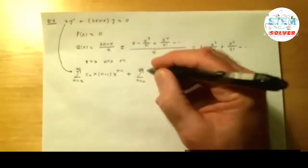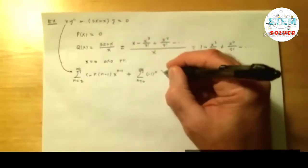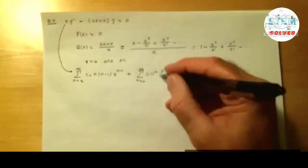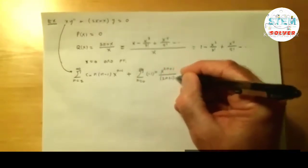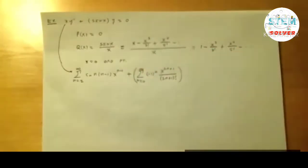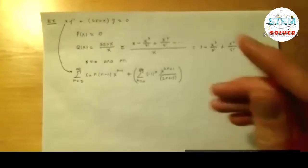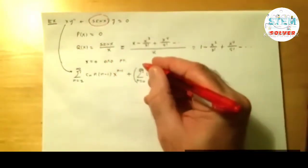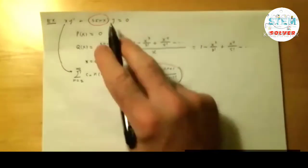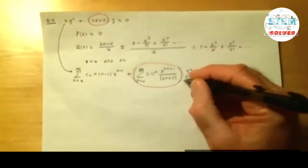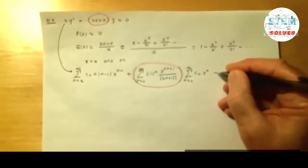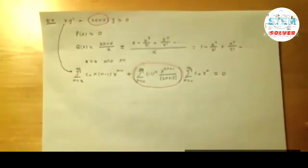So sine of x is a series from 0 to infinity, negative 1 to the n, x to the 2n plus 1, and not surprising, it's odd because sine is an odd function, divided by 2n plus 1 factorial. That is sine of x. That's going to be the key difference here than what we've done before. So this whole thing here is getting replaced with this right here. Now we're going to multiply it by y. Well, y is the power series that we had before. So it's a series from 0 to infinity, c sub n, x to the n, and we're going to try to make this equal to 0.